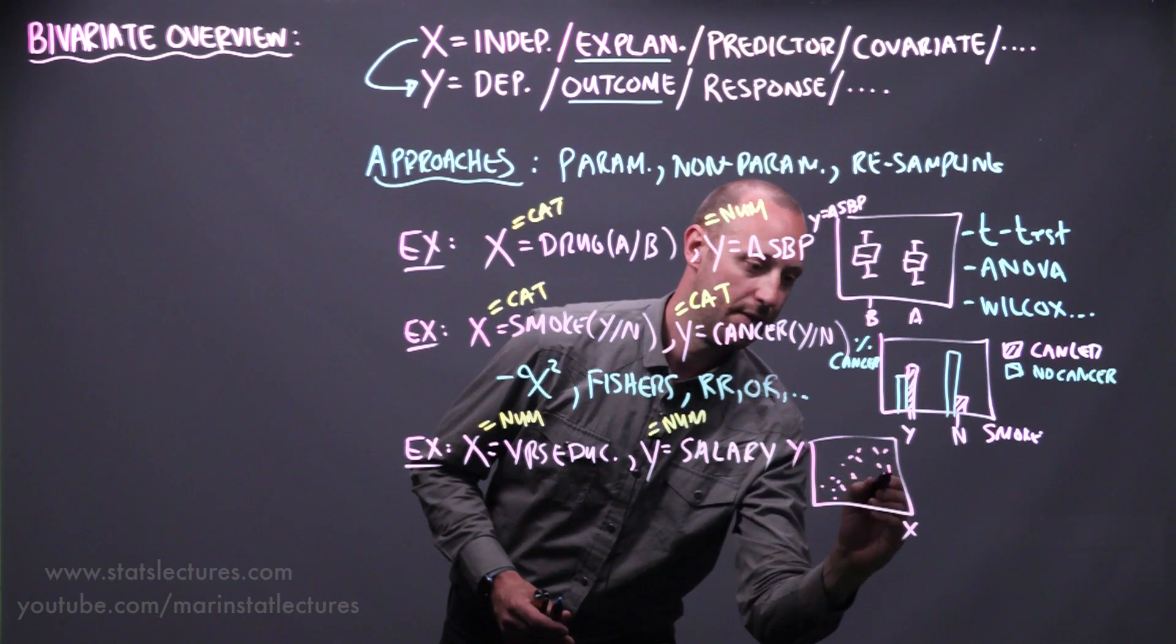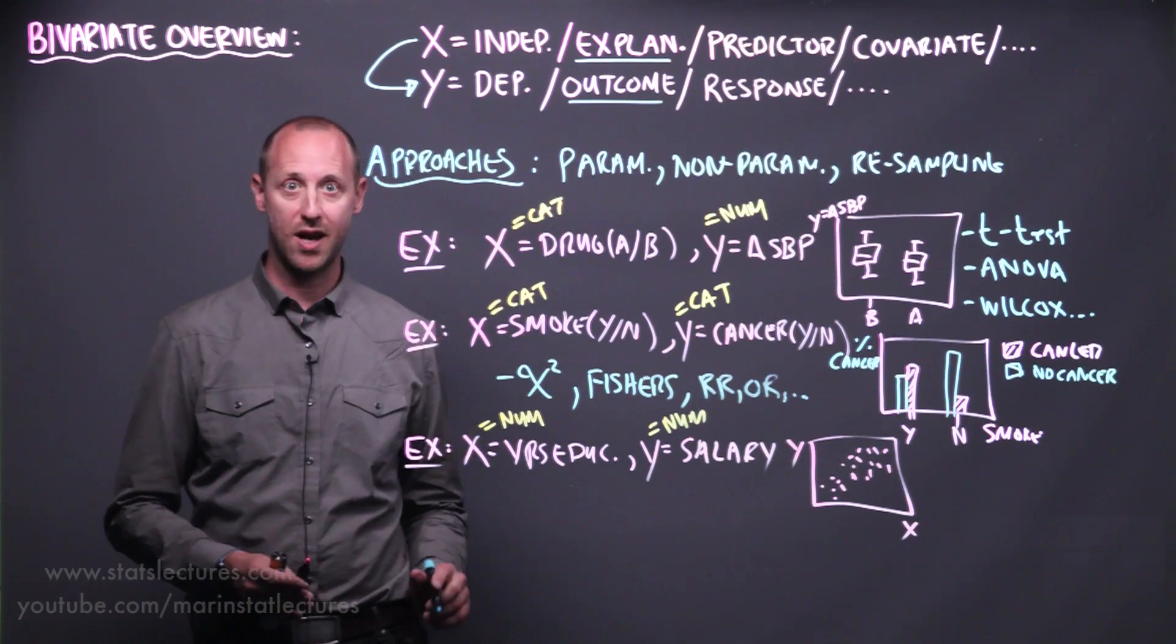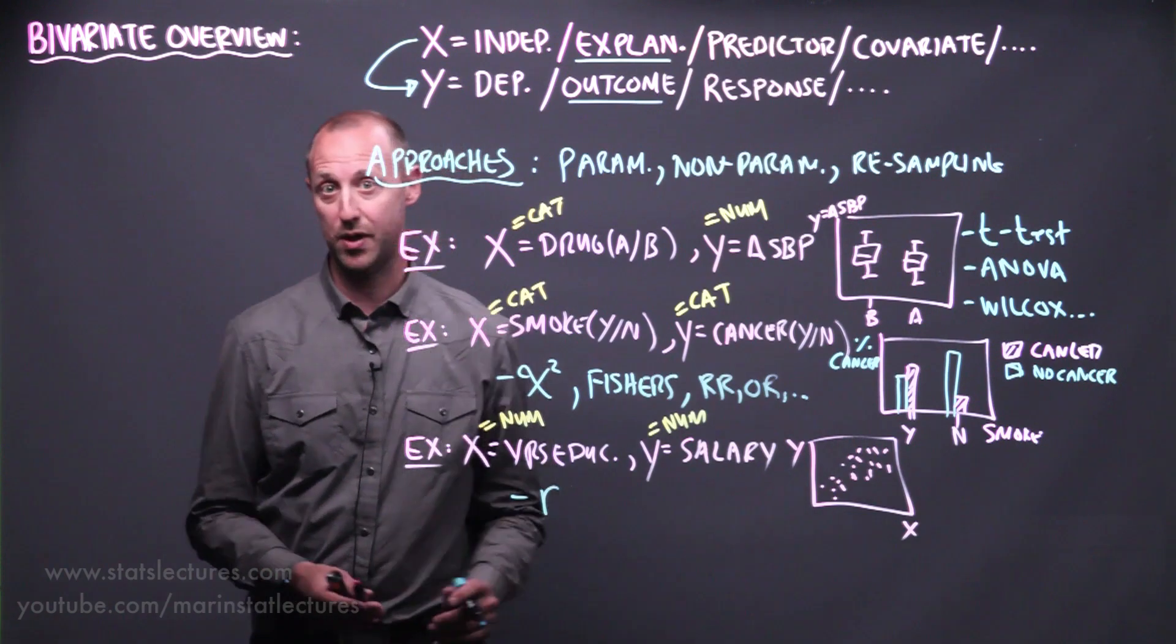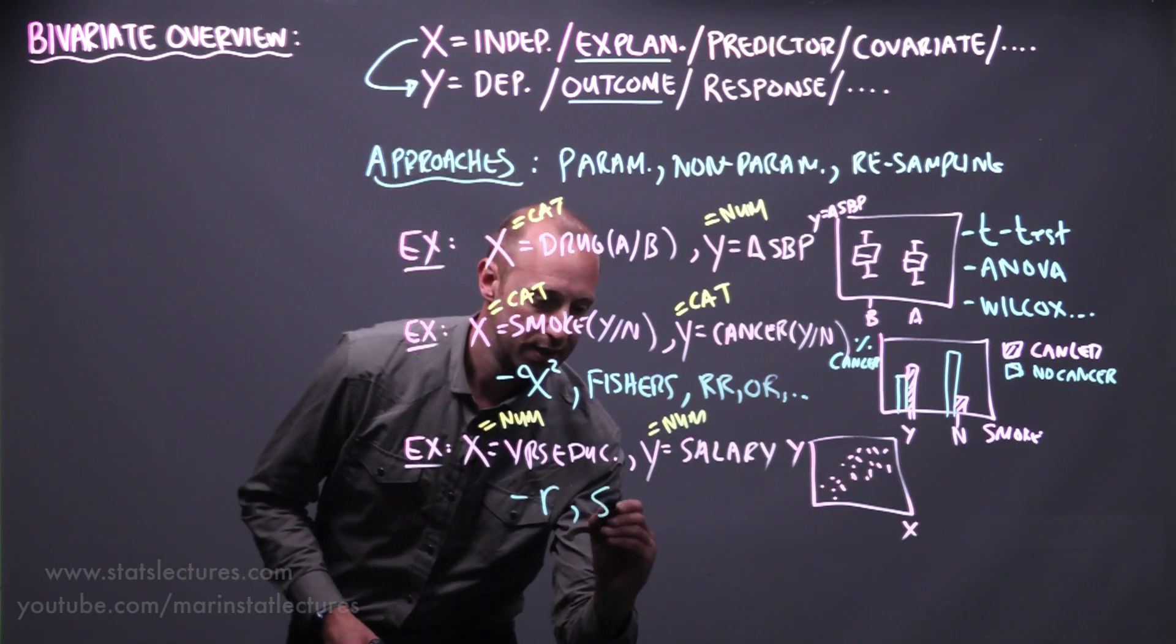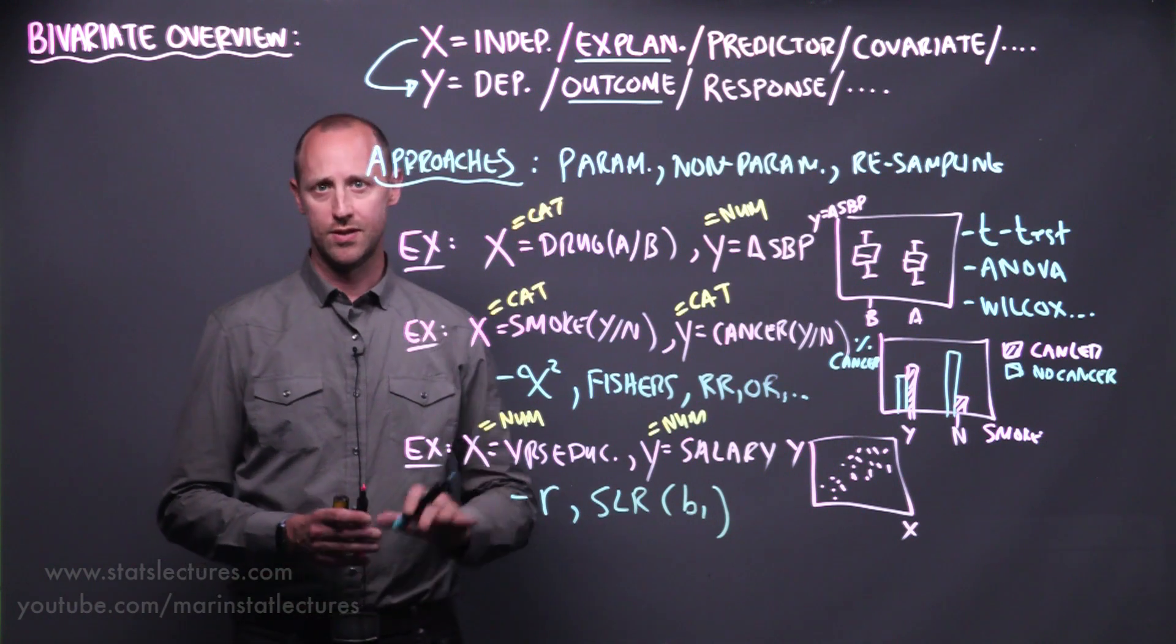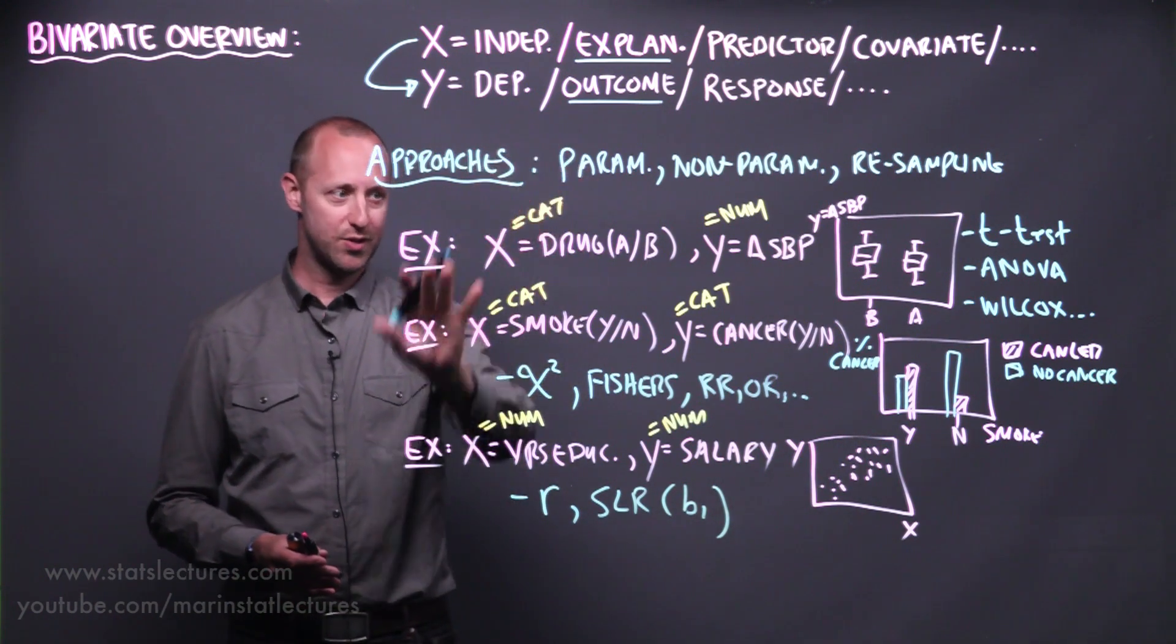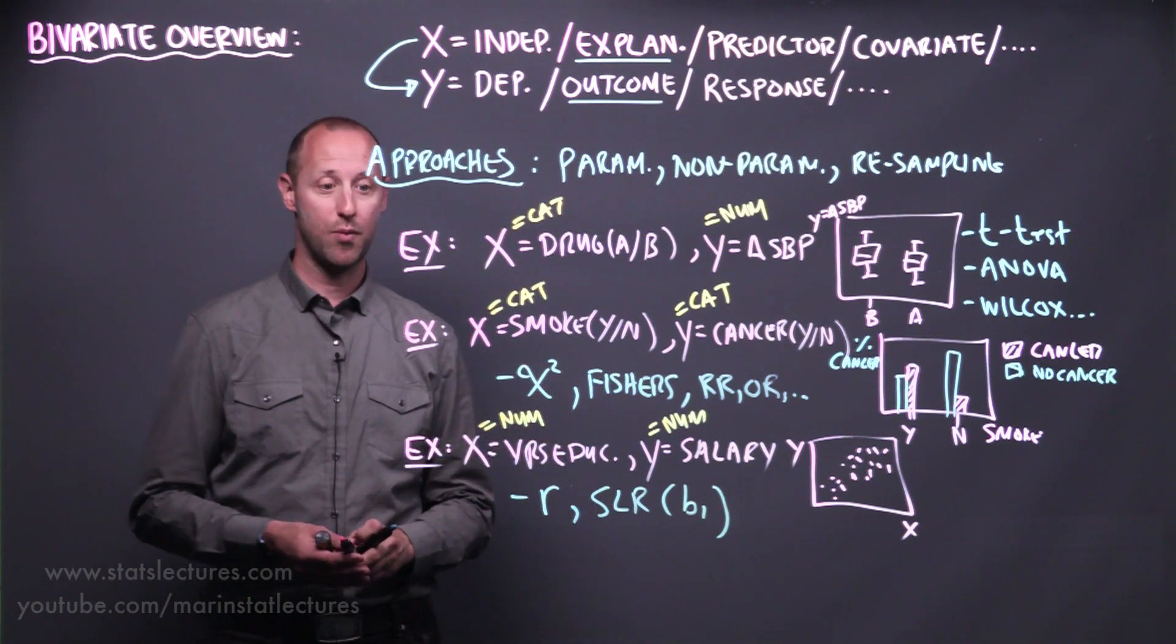So for visualizing the relationship between these two, we can think of looking at scatter plots and the relationship between x and y. And methods of analysis, some commonly encountered ones here are things like correlation, Pearson's or Spearman's correlation we'll talk about exactly what those are, and simple linear regression. One focus in simple linear regression is on the slope of the regression line. So here we're doing the large picture overview, we're going to slowly progress through each of these topics and more and add to them, talk about them a bit more in depth.